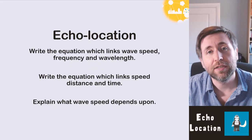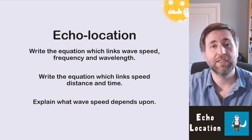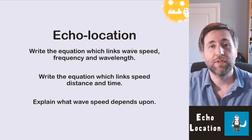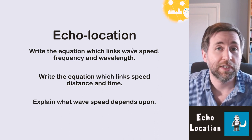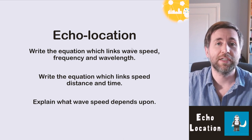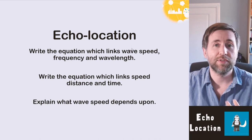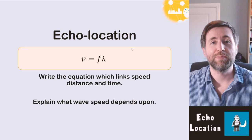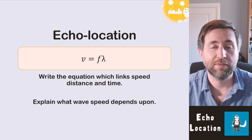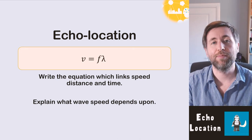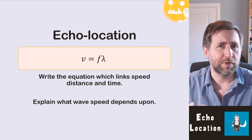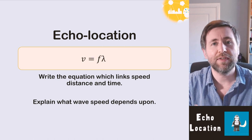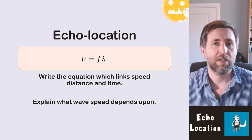To understand echolocation you need some basic ideas down first. You need to know the equation that links wave speed, frequency and wavelength: wave speed equals frequency times wavelength, v = fλ. What that really means is that the wave speed is fixed in any given medium.